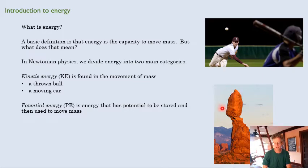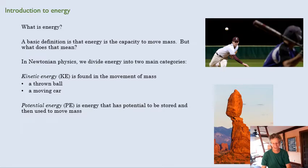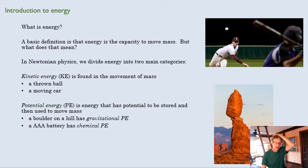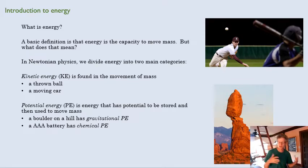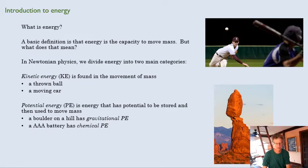That energy came from, in this case, gravitational potential energy. It has stored energy — even as it's just sitting there, it has potential energy. With some kind of physical change, we can turn that into kinetic energy. When I push that rock, my potential energy creates movement and is turned into kinetic energy before it lands on the ground. A boulder on a hill has gravitational PE, a AAA battery has chemical potential energy, and we can also have electromagnetic potential energy, but the one we'll deal with most is gravitational potential energy.